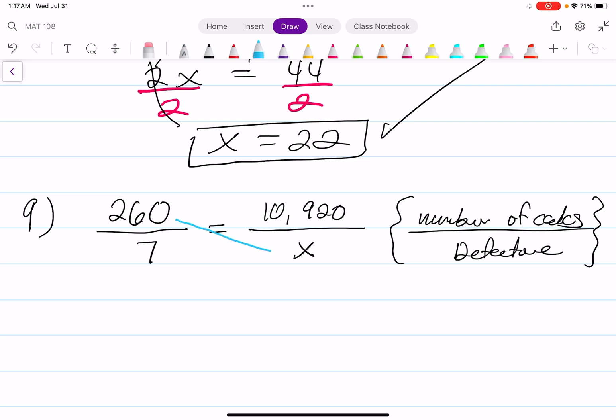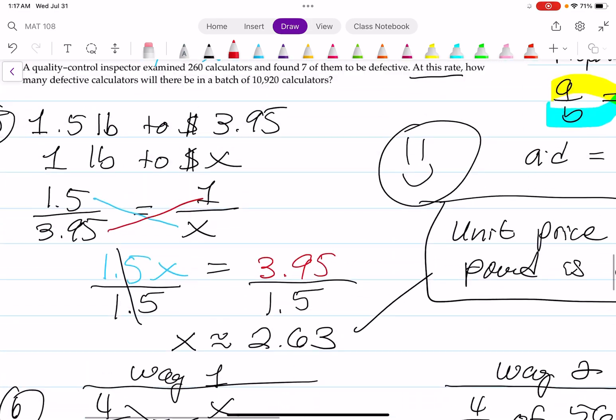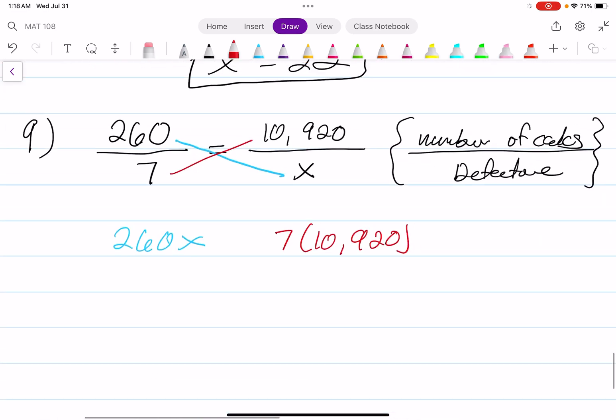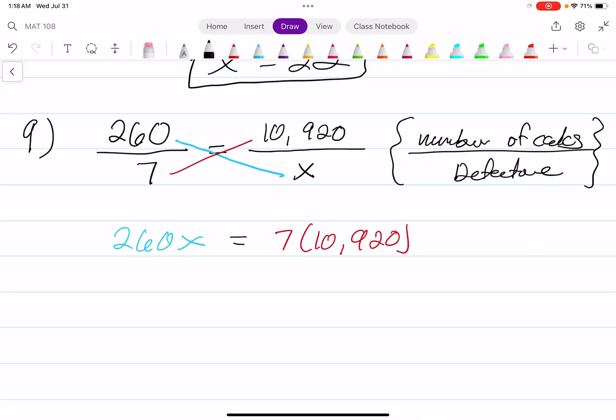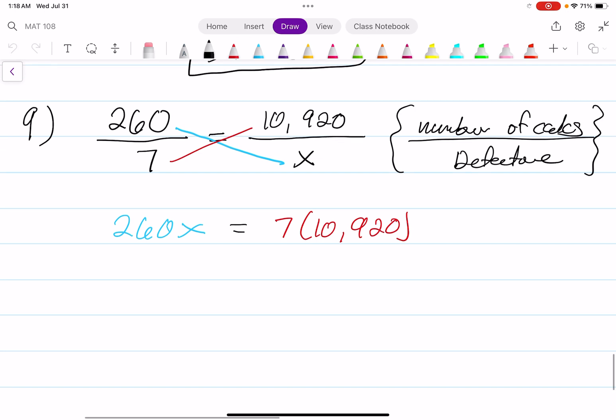We're going to cross multiply. 260 times X is 260X, and that's going to be 7 times 10,920. For the next video, at least I'll have the calculator open. I'm going to use another terrible Apple device, which is known as an iPhone. We're going to multiply 7 times 10,920, and that equals 76,440, and that equals 260X.